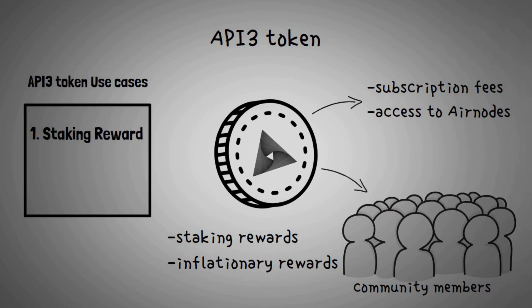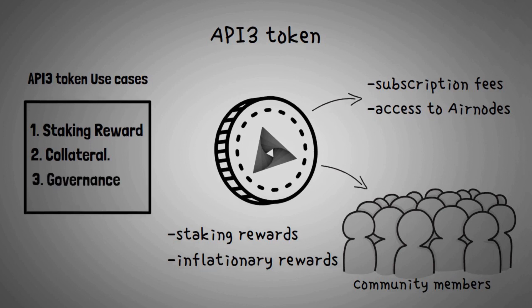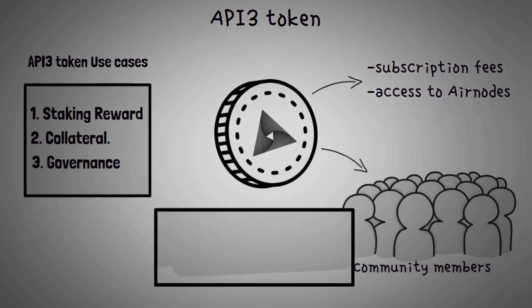Let's highlight the API3 token use cases. Staking reward: API3 holders when staking will receive dAPI revenue and inflation rewards. Collateral: an insurance service that protects users from dAPI failures by sharing risks with everyone to minimize losses. Governance: API3 holders have the right to vote to change API3 parameters and features.